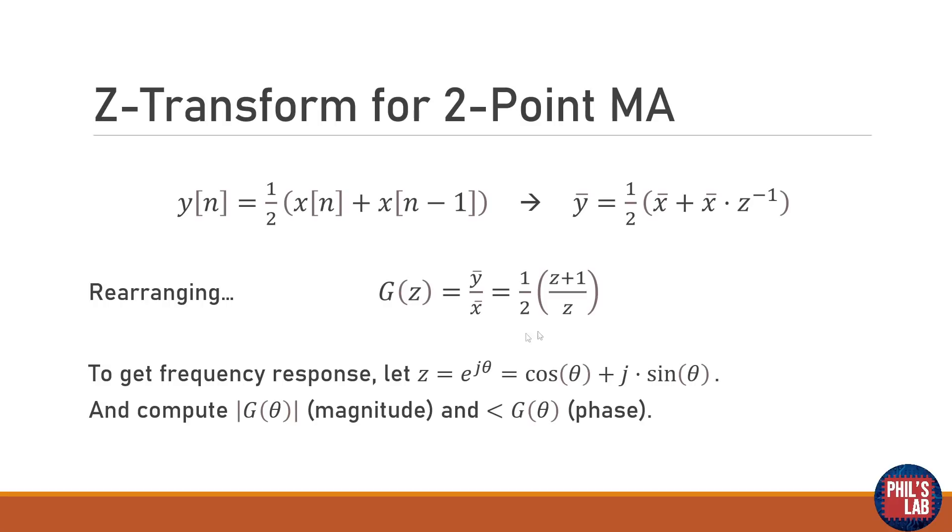Now we can rearrange for Y-bar over X-bar and that gives us our main transfer function for the moving average filter, the two-point moving average filter which is over here. We still have one zero and we have one pole. Now to get the frequency response as usual we let Z equal e to the j theta and then using Euler's identity, cos theta plus j sine theta. From that we can then compute the magnitude by taking the absolute value and then finding the argument we can get the phase.